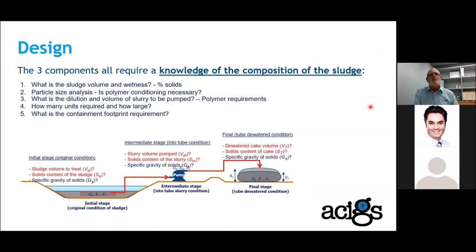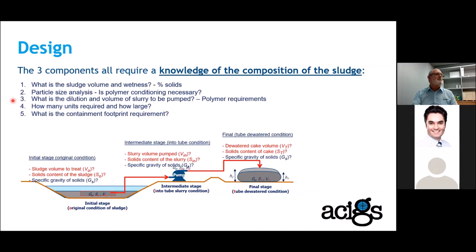It's important to have knowledge of the sludge composition, as that ultimately affects selection of the size and type of geosynthetic container. You need to look at the sludge volume and its percentage solids in situ, which dictates the ultimate container size. Particle size analysis gives insight into whether polymer conditioning is needed. Specific gravity and relative density affect what size geocontainer you can use. All these inputs determine how many units you need, how large, and dictate the footprint required for your containment lay-down area.